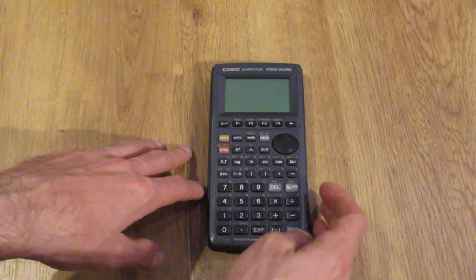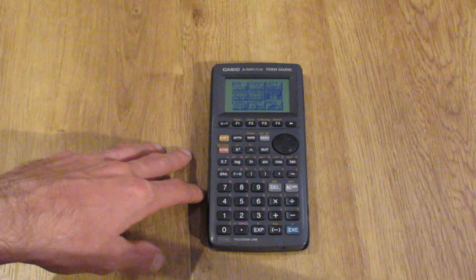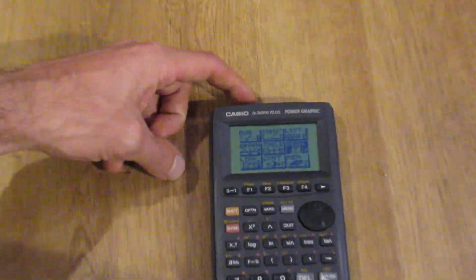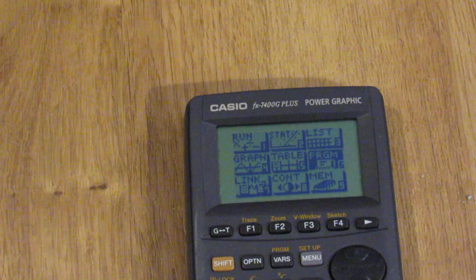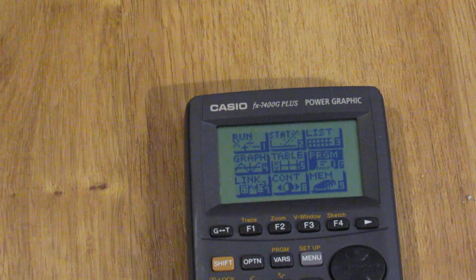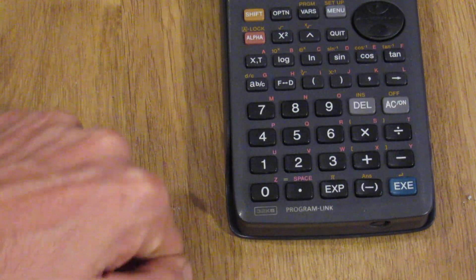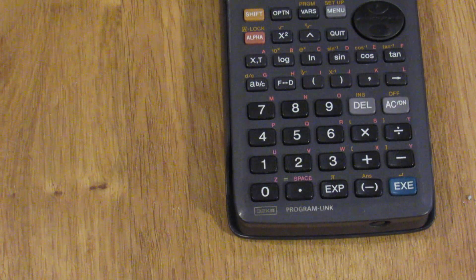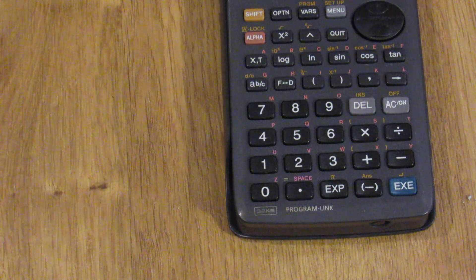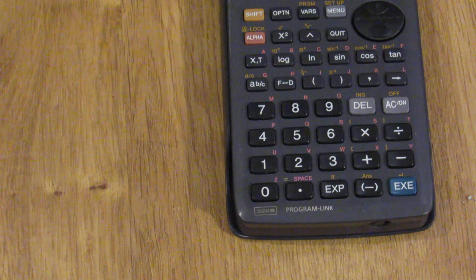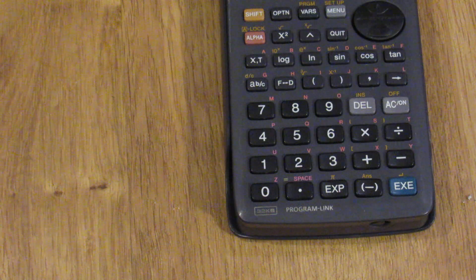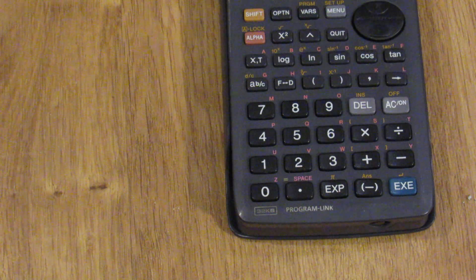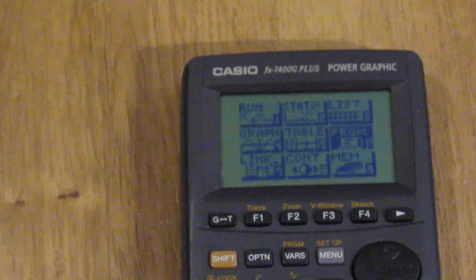But anyway so when I turn this on and go in the menu here you can see it has a smaller display. It has 32k of RAM, really 20 kilobytes for programming. It's a simplified version of the 9850G and it's an entry level calculator. But still even though it's an entry level calculator you get quite a lot built in.